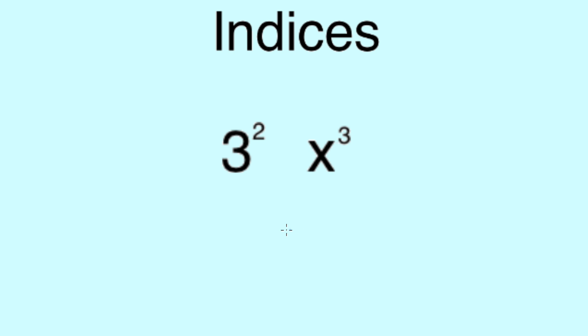So you're probably already familiar with 3 squared, or 3 to the power of 2, and x cubed, which is x to the power of 3. For 3 squared, that would just be another way of representing 3 times by 3, which equals 9. And x cubed would just be x times x times x.